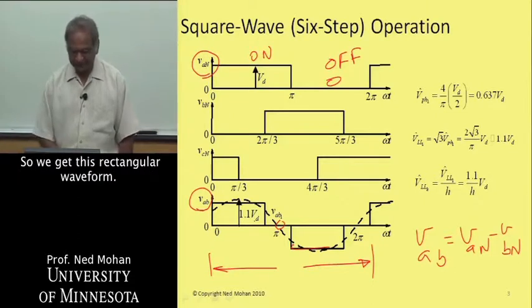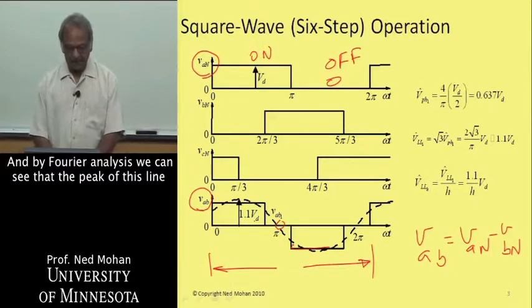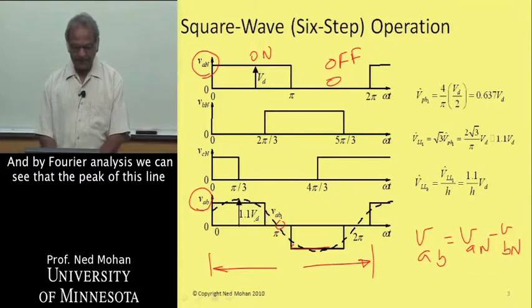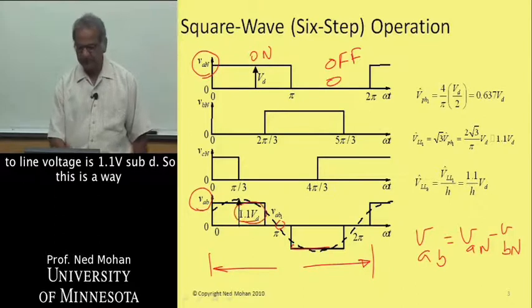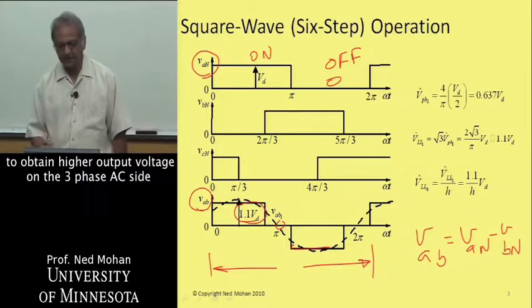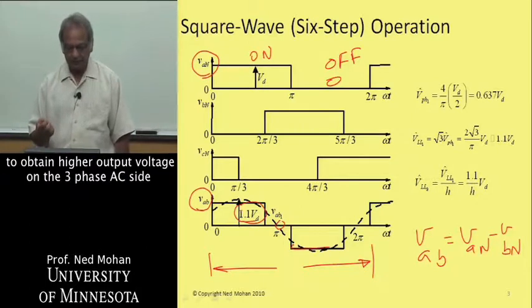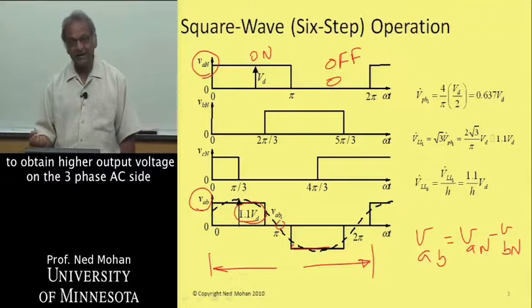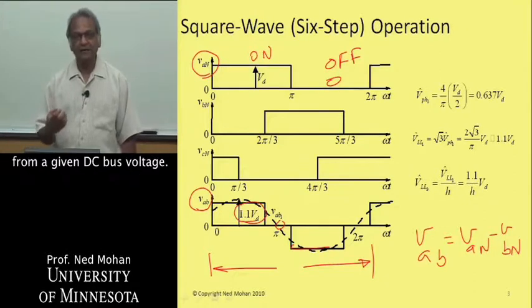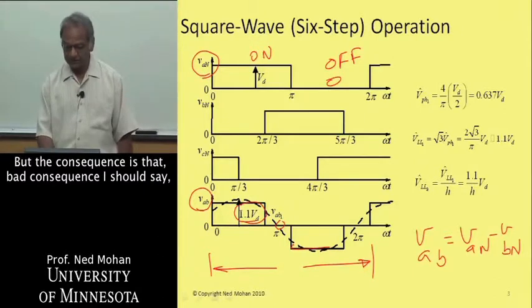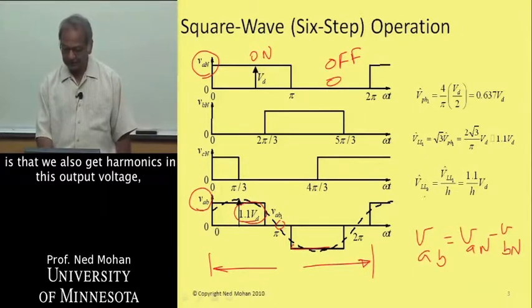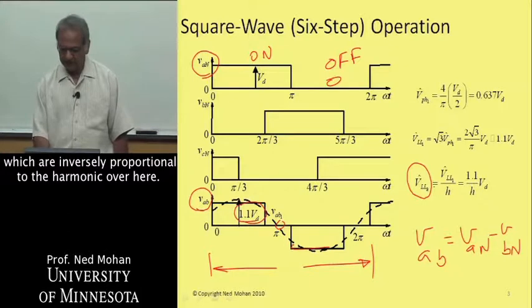We get this rectangular waveform, and by Fourier analysis, we can see that the peak of this line-to-line voltage is 1.1 V sub D. This is a way to obtain a higher output voltage on the three-phase AC side from a given DC bus voltage. But the consequence is that we also get harmonics in this output voltage which are inversely proportional to the harmonic order.